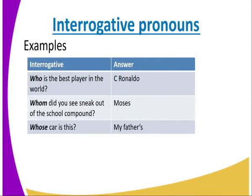For example: 'Who is the best player in the world?' — the answer is Cristiano Ronaldo. 'Whom did you sneak out of the school compound with?' — the answer will be Moses. 'Whose car is this?' — my father. So you can see the answers are all related to people.